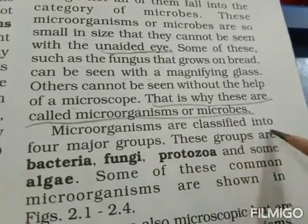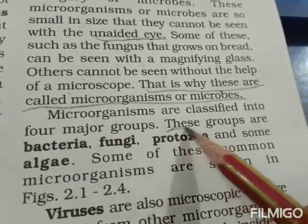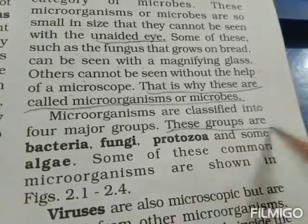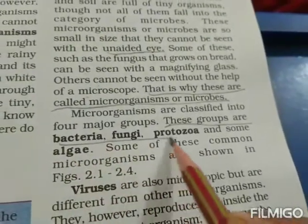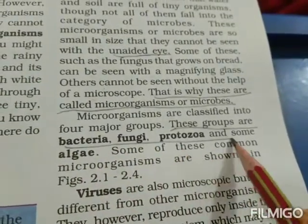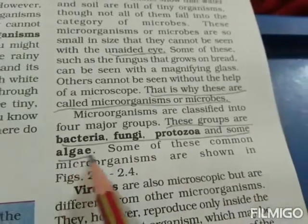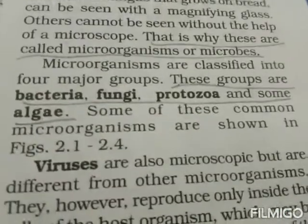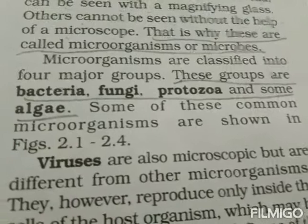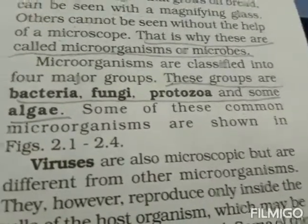Microorganisms are classified into four major groups: bacteria, fungi, protozoa, and some algae. There are certain algae that are also unicellular, that is single-celled.